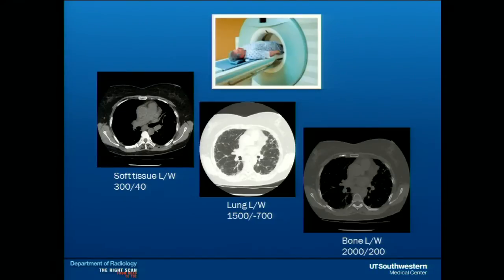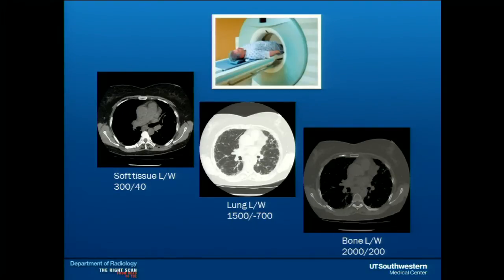This slide shows the patient entering into the CT gantry. The images in the inferior portion of the slide show not only the lungs but also the mediastinum and bone. Evaluation of the mediastinum is important for evaluating lymph nodes, aorta, and pulmonary artery. At the same time, you can look for any bone lesions and lung lesions.